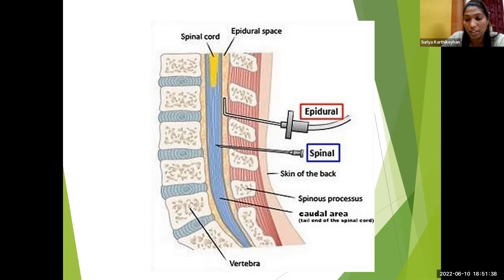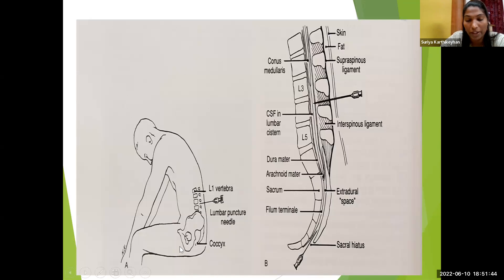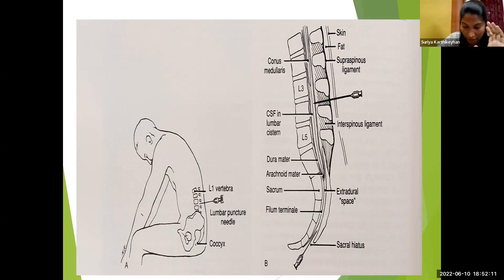These are the layers pierced while doing an LP procedure. Regarding positioning: if the patient is lying on a couch, use left or right lateral position; ask the patient to flex the thigh at the hip joint and flex the neck — universal flexion. Alternatively, the patient sits on a couch and flexes the neck and thighs. This same position is followed for lumbar puncture and spinal anesthesia.